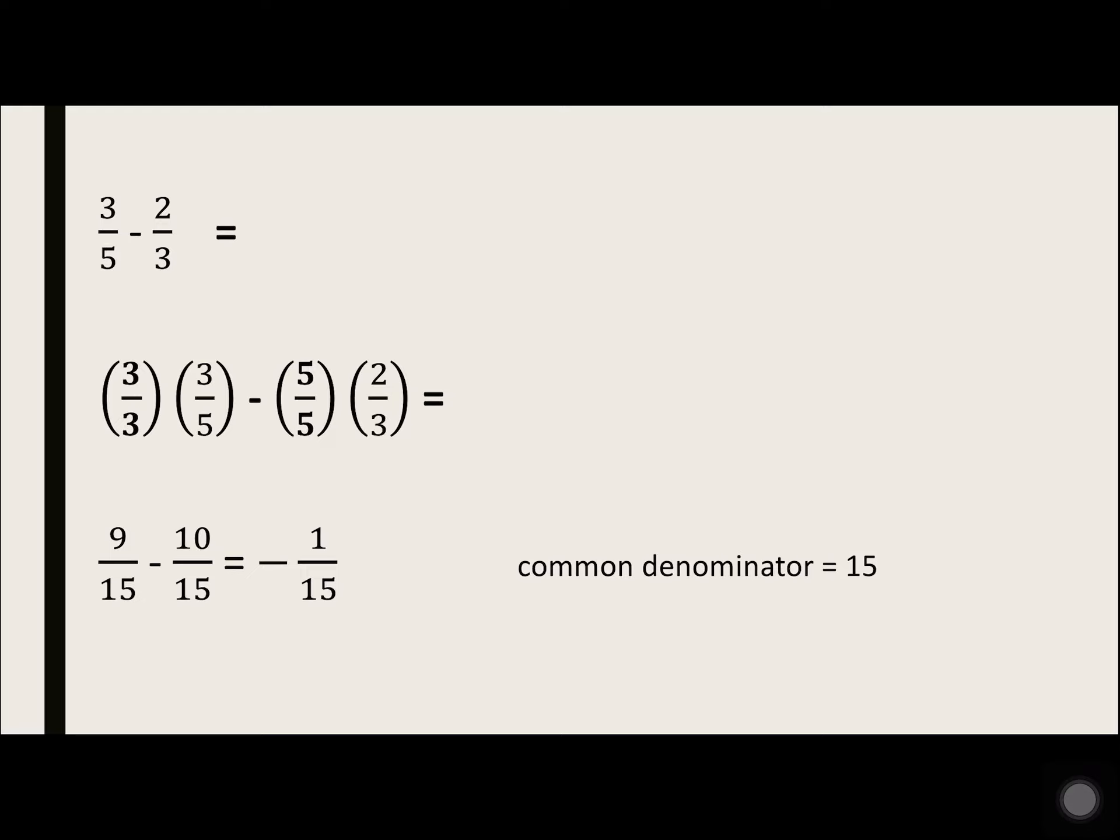3 over 5 minus 2 over 3 – common denominator 5 times 3 is 15. So the fraction on the left has a 5, so we need to multiply by 3 to get 15. So multiply it by 3 over 3 – 3 times 3, 9. 3 times 5, 15.